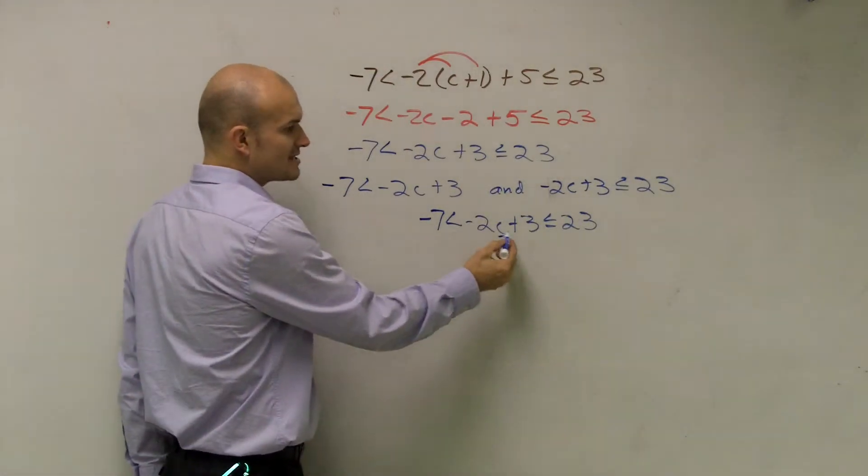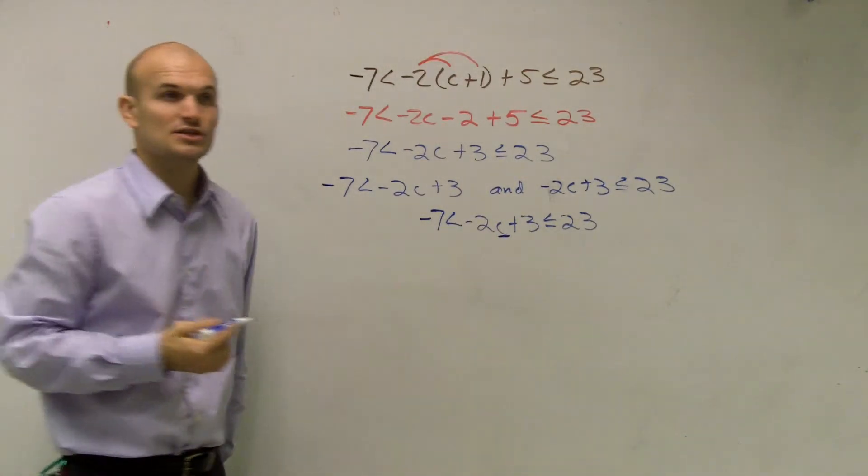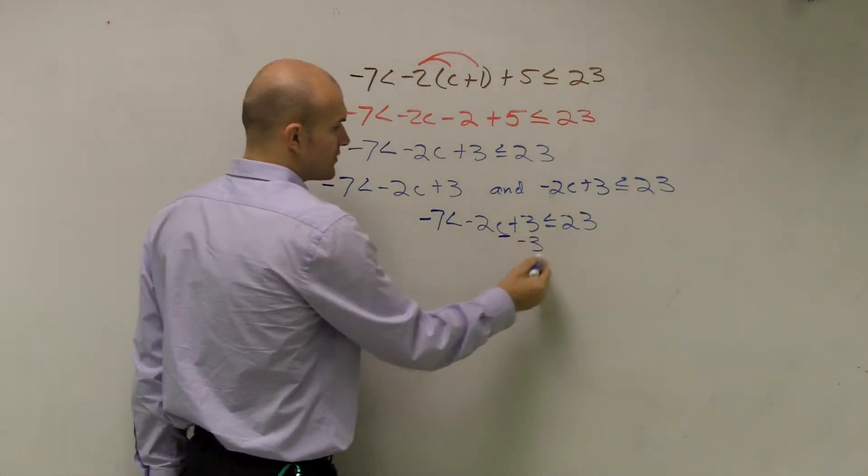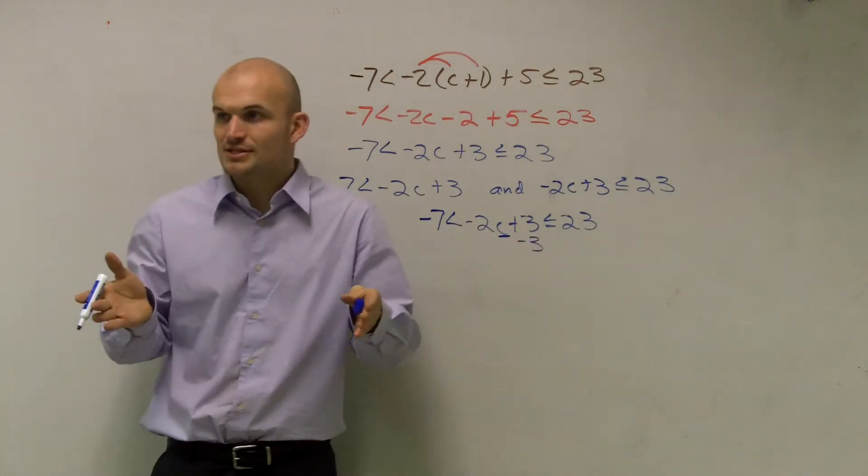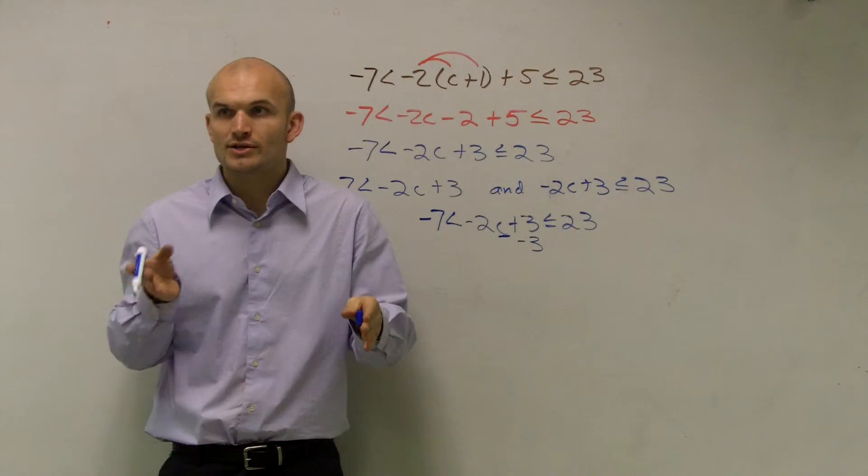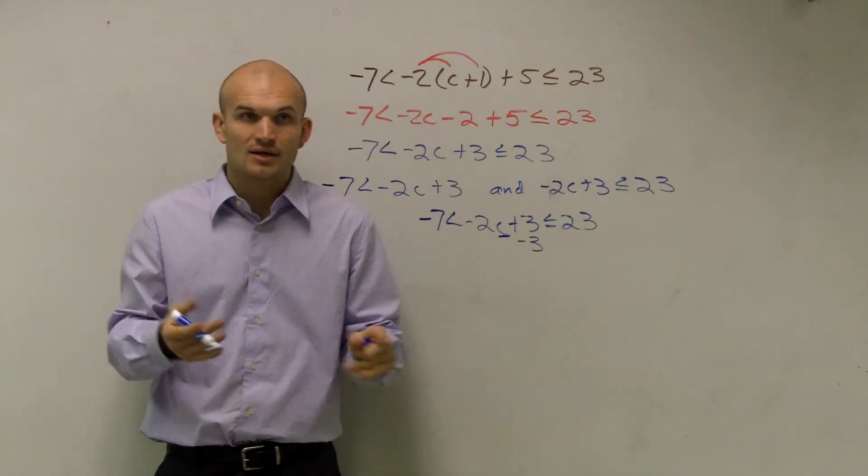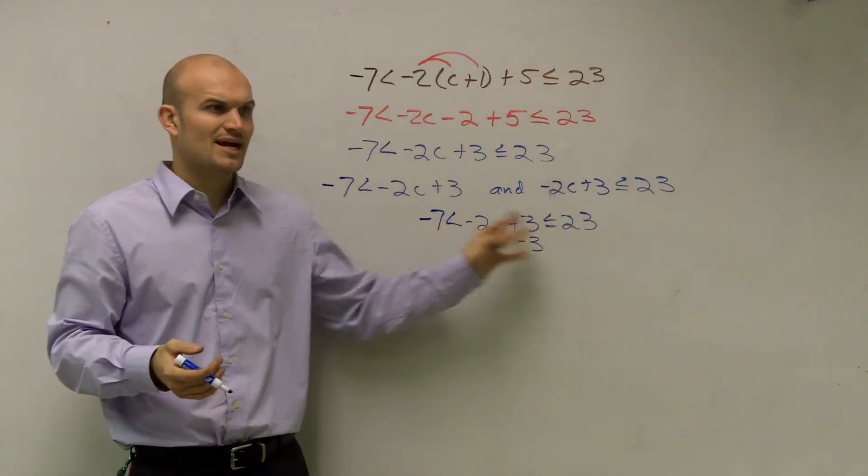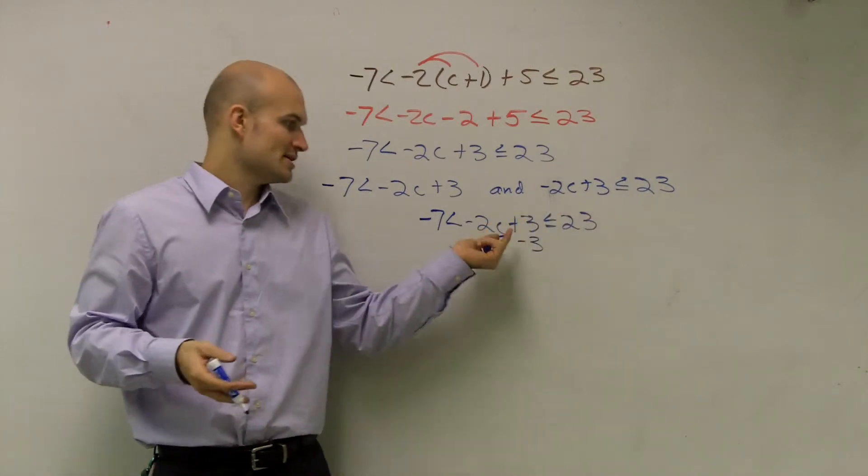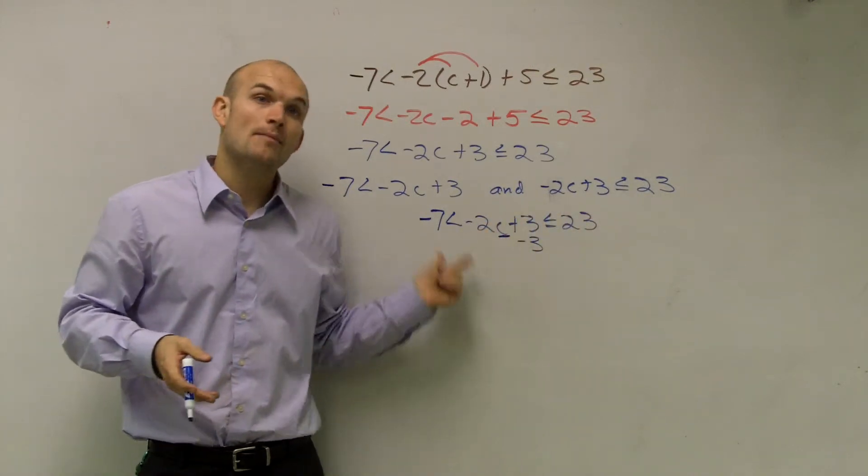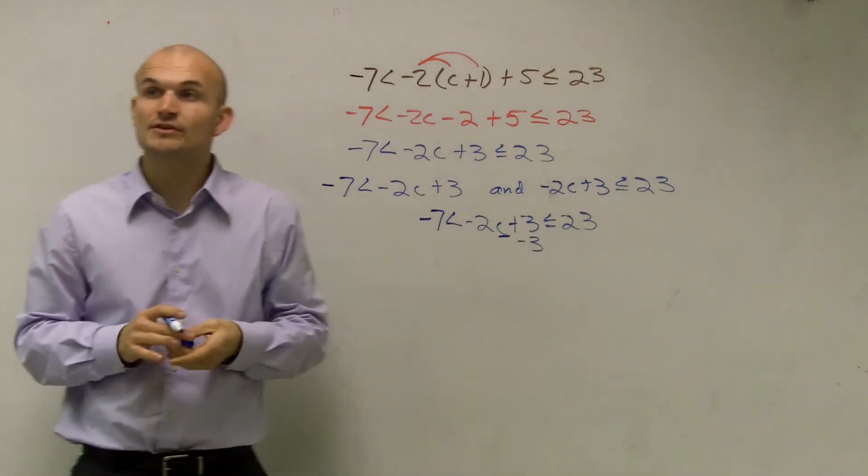But if you want to do them combined, what you do is, remember, you've got to isolate your variable c. So to do that, what I need to do is subtract the 3. And remember, equations or inequalities, either one, you guys had a left and a right side, right? Well here, we have two sides. So we kind of have a left, a middle, and a right. So if I'm going to subtract a 3 in the middle, I'm also going to have to subtract a 3 on the left and the right side.